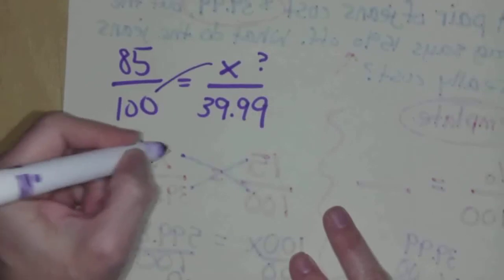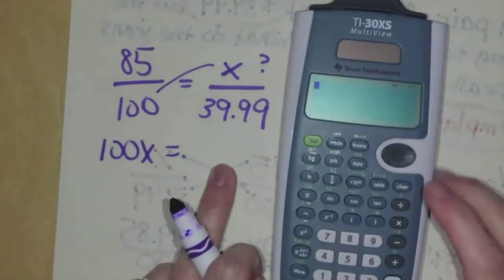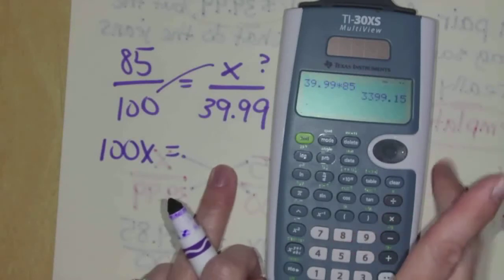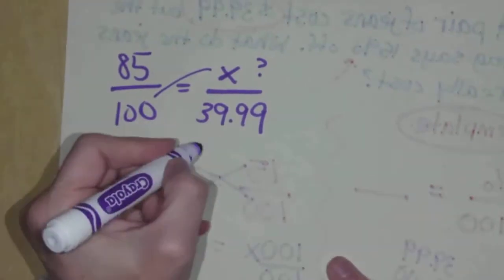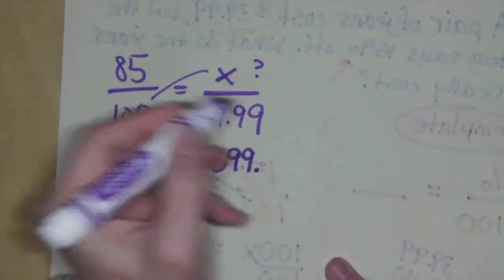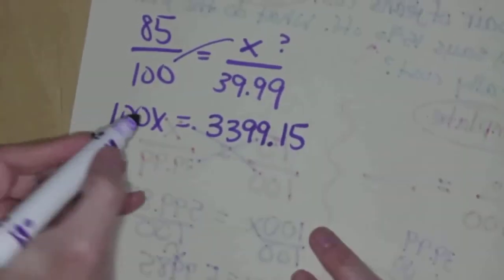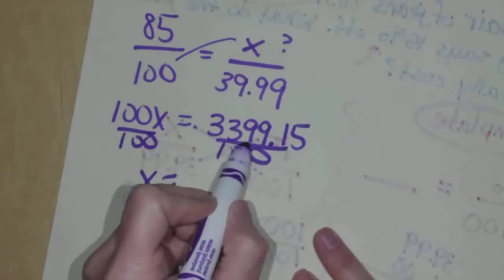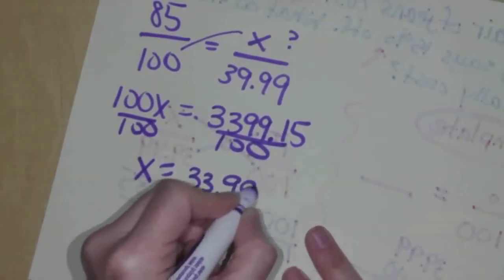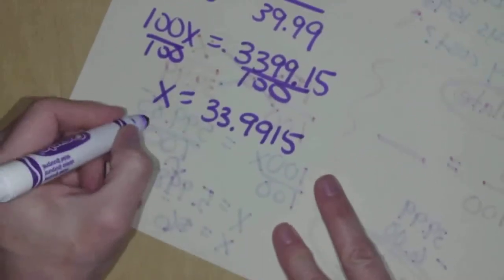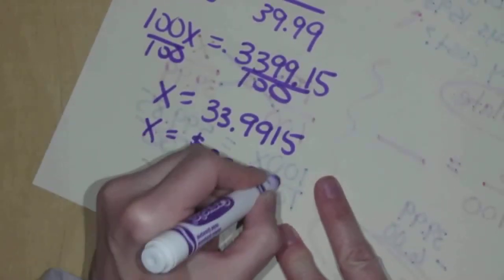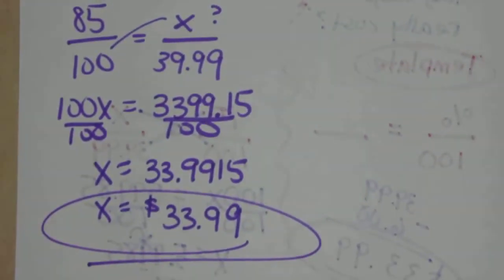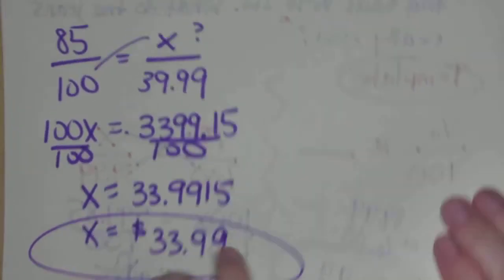You get 100x equals, let's take $39.99 times 85. That's 3,399.15. Now we divide by 100, which means I move that decimal 1, 2 to the left, so that's 33.9915. But for the sake of money, that would be $33.99.